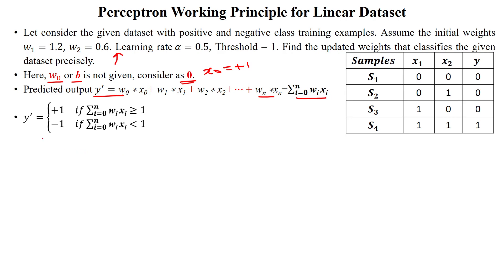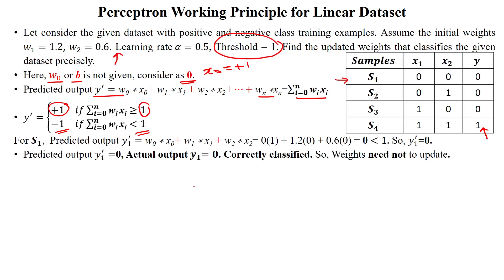Based on the given values, we substitute and calculate the predicted output. The given samples use 0 for the negative class and 1 for the positive class. The threshold is 1, so whenever the linear sum is greater than or equal to 1, the sample is predicted as a positive sample; if less than 1, it is a negative sample. Now we take sample number 1 to apply the perceptron rule.